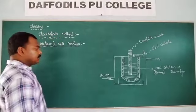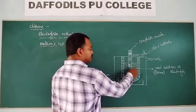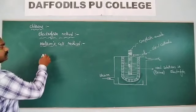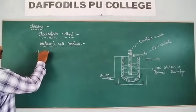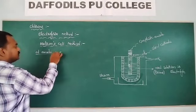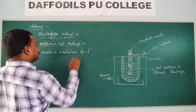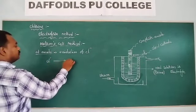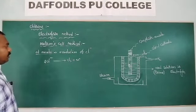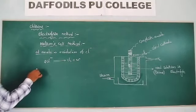On passing electricity, the NaCl undergoes dissociation. At the anode, oxidation of Cl⁻ occurs. When Cl⁻ undergoes oxidation, you get chlorine gas. At the anode, Cl⁻ undergoes oxidation and the chlorine gas is liberated.